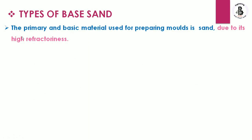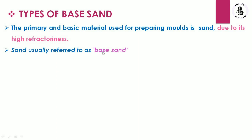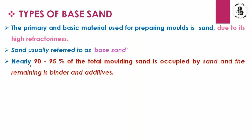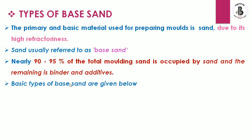Now we will discuss the types of base sands. The primary and basic material used for preparing a mold is sand, due to its high refractoriness. Sand is usually referred to as base sand. Nearly 90 to 95 percent of total molding sand is occupied by sand, and the remaining part consists of binders or additives. The basic types of base sands are: silica sand, chromite sand, zircon or zirconium silicate, and olivine sand.